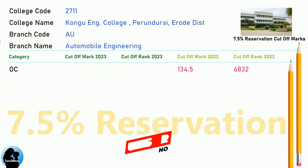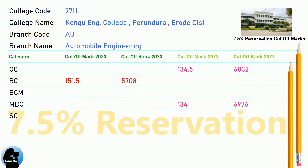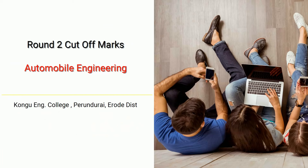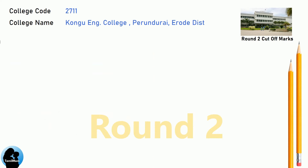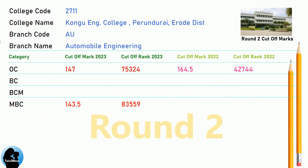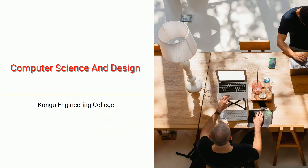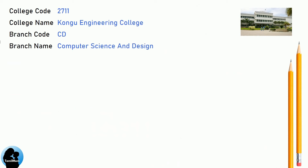DNA Round 2 Cut-Off for Kongu Engineering College in Automobile Engineering. DNA Cut-Off for Kongu Engineering College in Computer Science and Design.